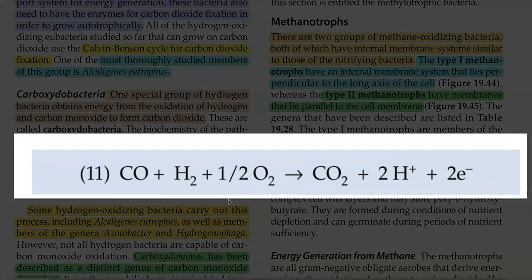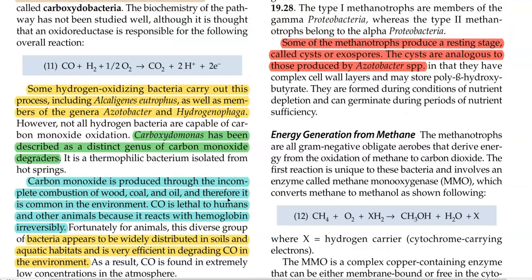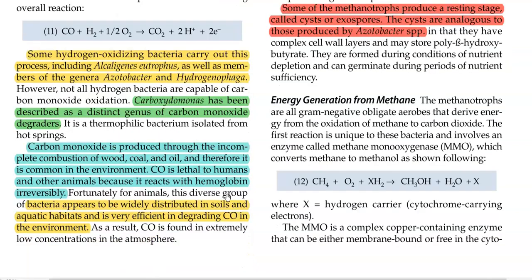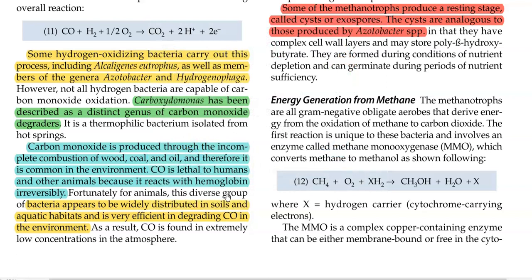The equation for this particular process has been shown. Some hydrogen-oxidizing bacteria carry out this process, including Alcaligenes eutrophus as well as members belonging to the genera Acetobacteria and Hydrogenophaga, which are capable of this carbon monoxide oxidation process. Among the various bacteria, Carboxidomonas has been described as a distinct genus for carbon monoxide degradation. In general, carbon monoxide is produced through incomplete combustion of wood, coal, and oil, and therefore will be commonly present in the environment, where it can have a lethal effect on humans as well as other living organisms.